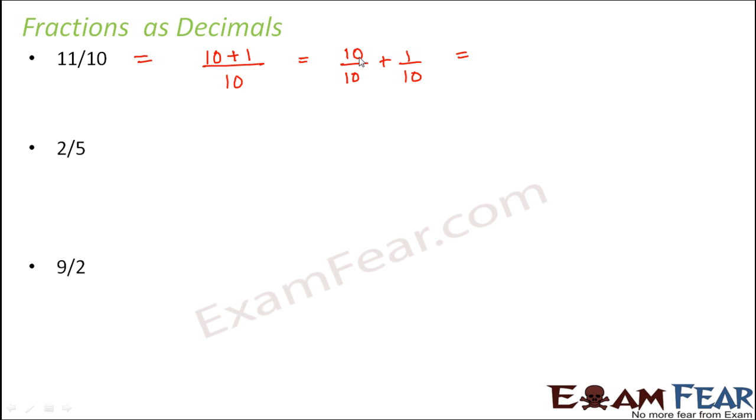Now 10 by 10 is 1 because they divide each other completely. And what about 1 by 10? 1 by 10 is 0.1. You remember in the previous slide what we learned? Anything divided by 10, 100, 1000, that actually represents a decimal number. So you put the decimal point in such a way that there is only one digit after the decimal point. So 1 by 10 can be written as 0.1. So 1 plus 0.1 is 1.1. We have successfully converted a fraction into decimal.